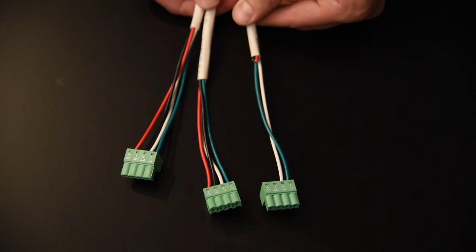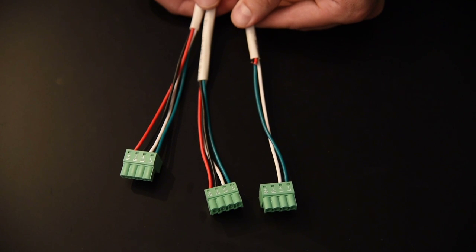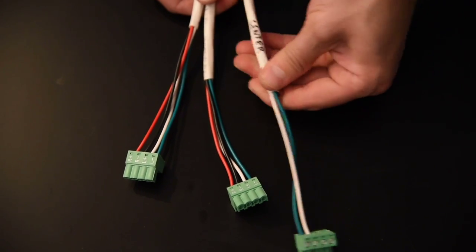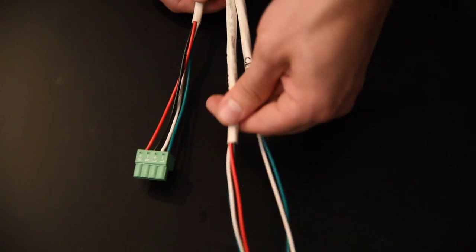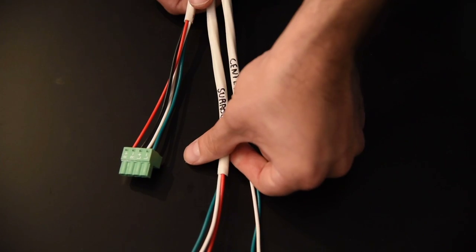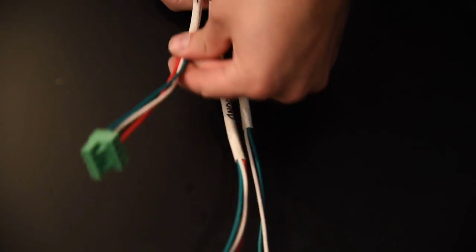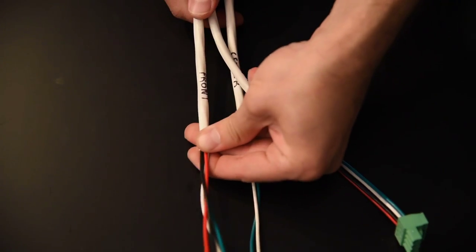So now I have three sets of cables. On one side of each set of cable, I have these blocks on the ends, and they're labeled as center, surround, and front.